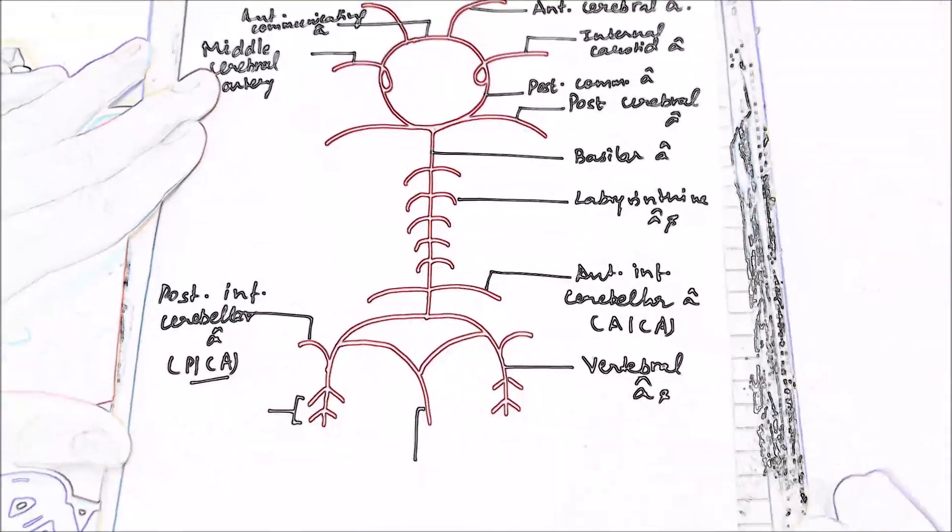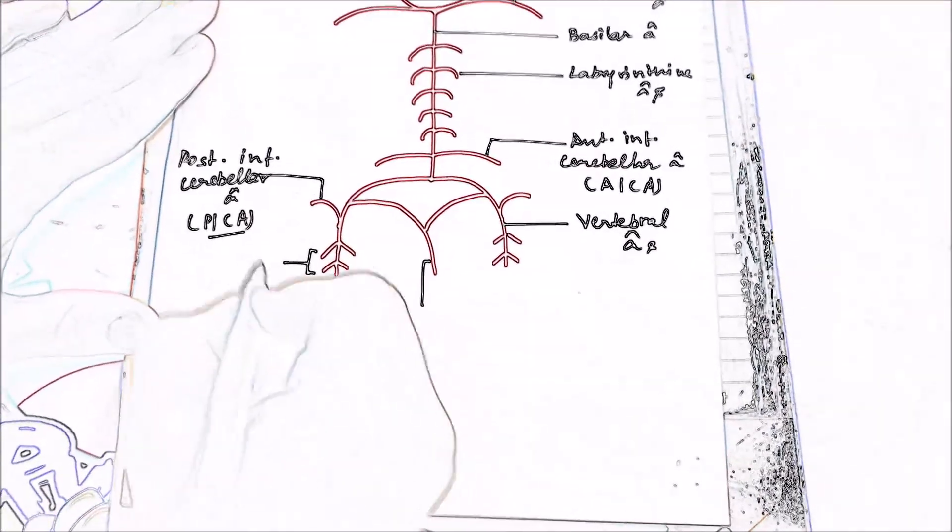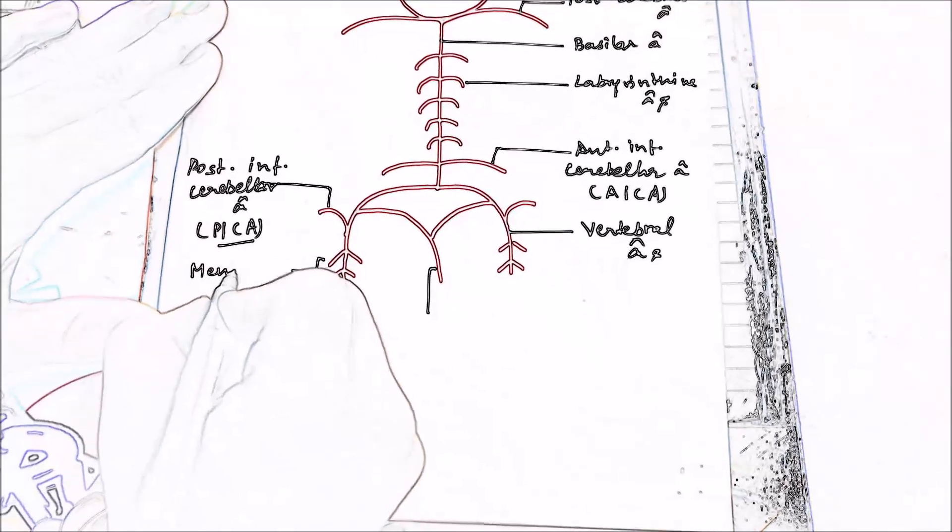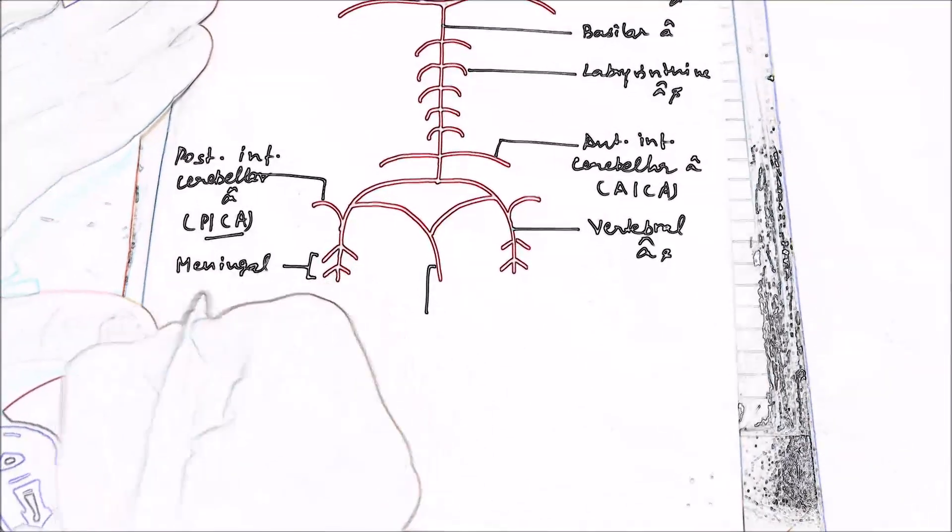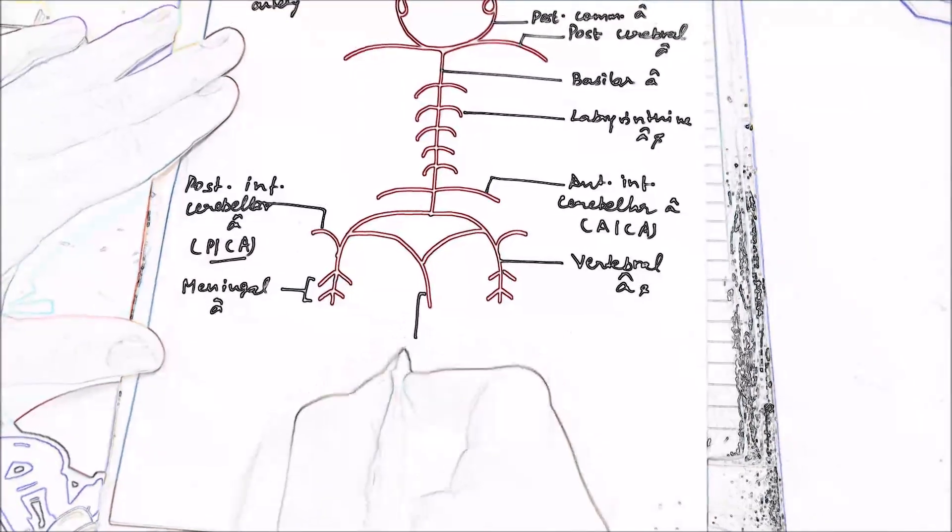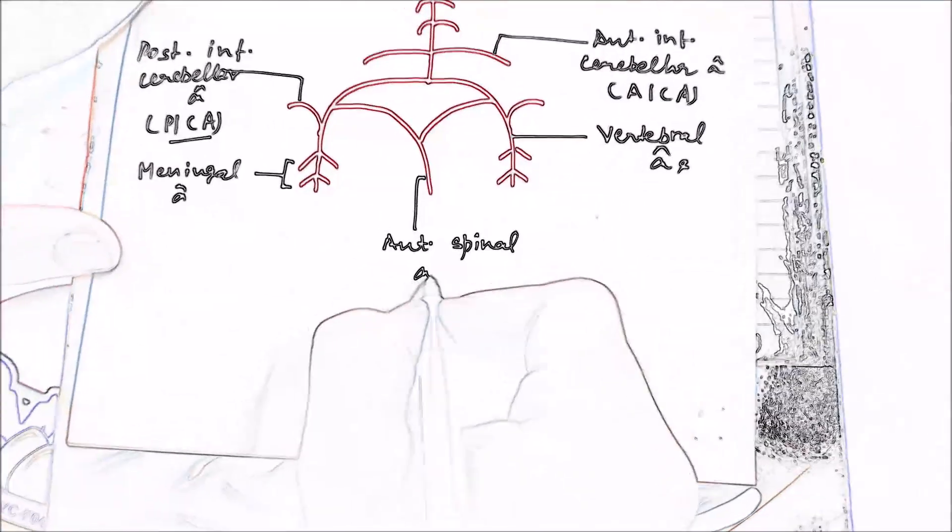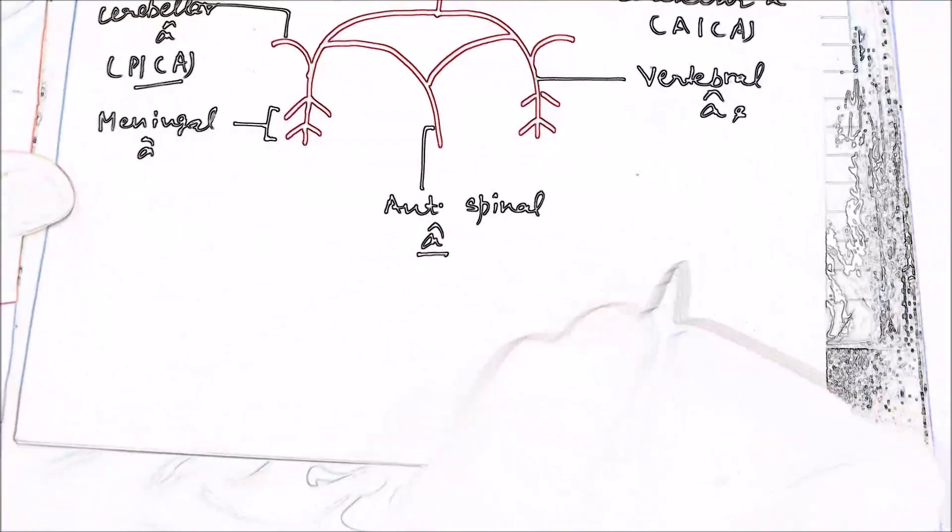A few quick branches here called the meningeal branches, meningeal arteries supplying the meninges of your brain. And these are your anterior spinal artery. So yeah, this is all about it.